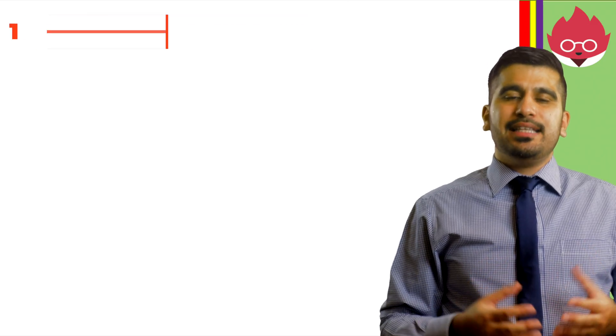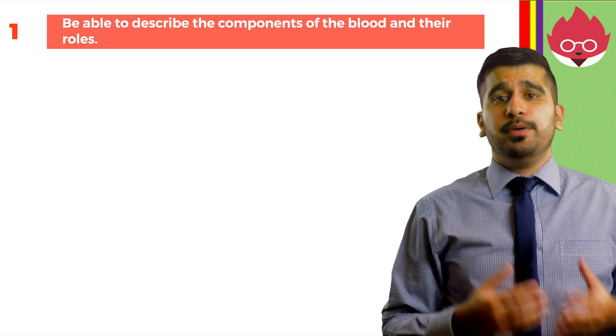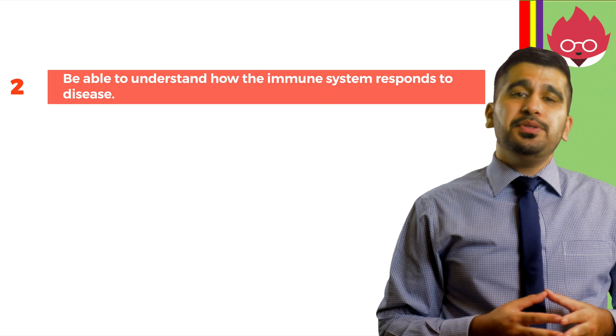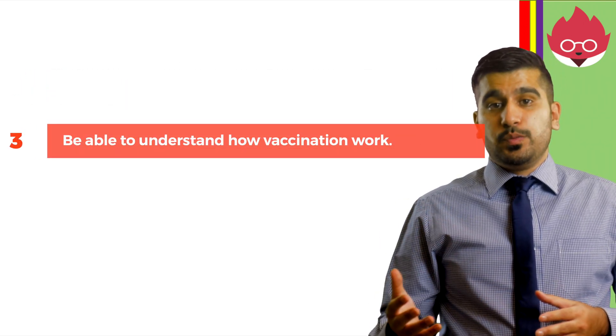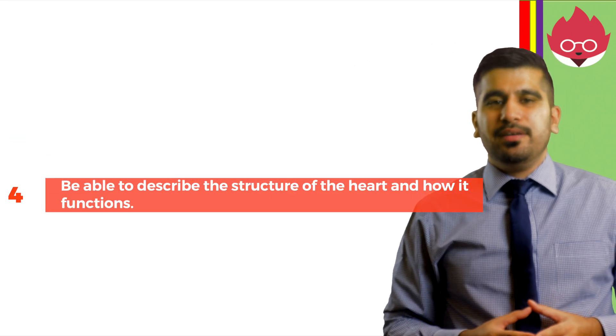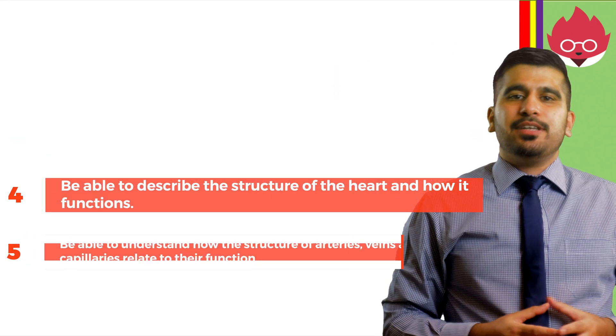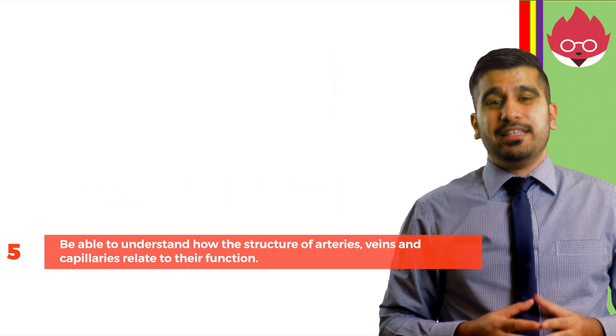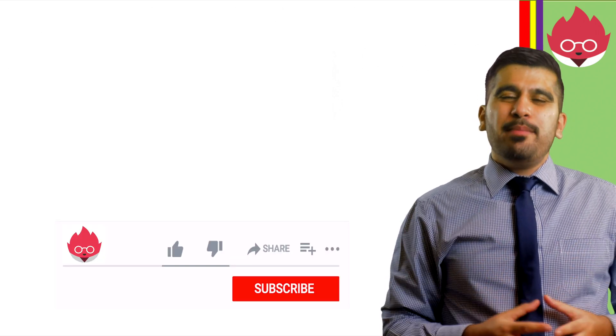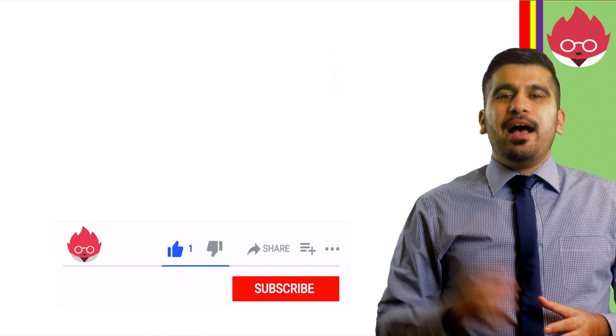By the end of this lesson, you should be able to describe the components of the blood and their roles, understand how the immune system responds to disease, understand how vaccinations work, describe the structure of the heart and how it functions, and understand how the structure of arteries, veins, and capillaries relate to their function. In our next lesson, we'll be looking at excretion in plants. Please remember to like, subscribe, and post any questions in the comments box below.